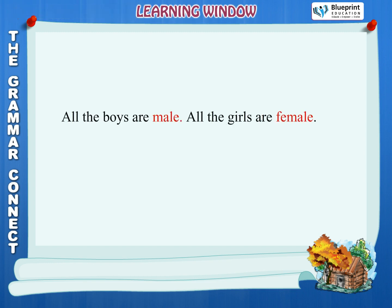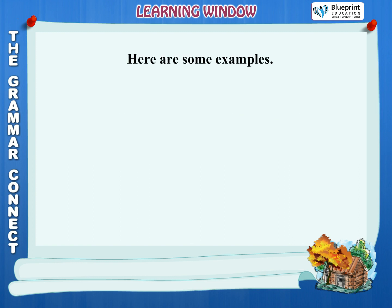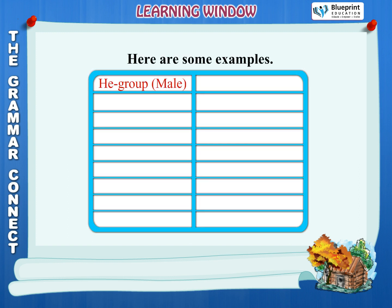Learning Window. All the boys are males. All the girls are females. Some naming words tell us if a person or animal belongs to the he group or the she group. Here are some examples. He group: male. She group: female.